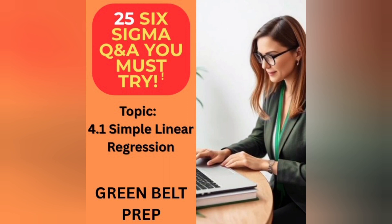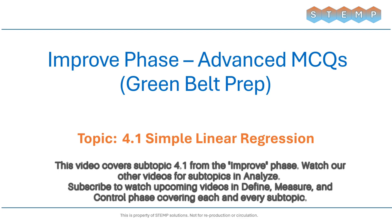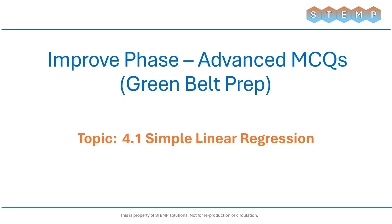Welcome! In this video, you will find 25 carefully selected Green Belt Six Sigma multiple choice questions designed to test your understanding and help you get exam ready. Each question comes with 4 answer options. We recommend you write down your answers on paper as you go through the video. At the end, we will reveal all the correct answers so you can check your performance and identify areas to improve. Let's begin!